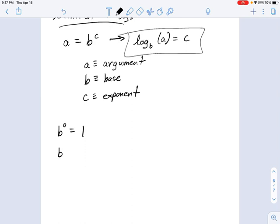And we also know that any number to the 1st power equals that number. So I can turn both of these things into logarithmic expressions and say log base b of 1 equals 0, and log base b of b equals 1.